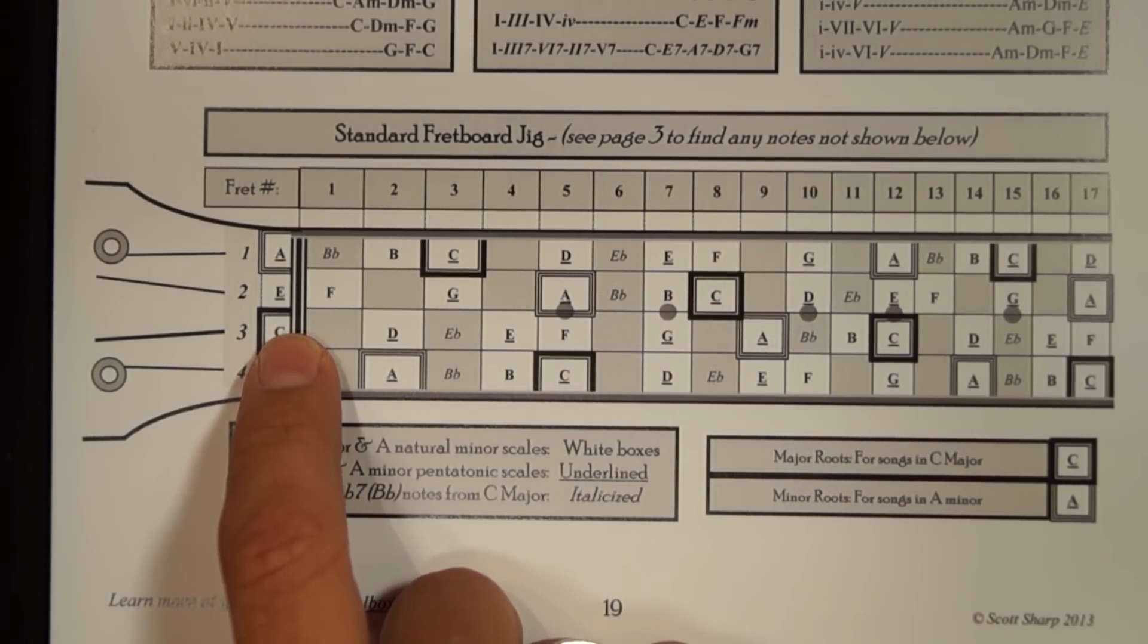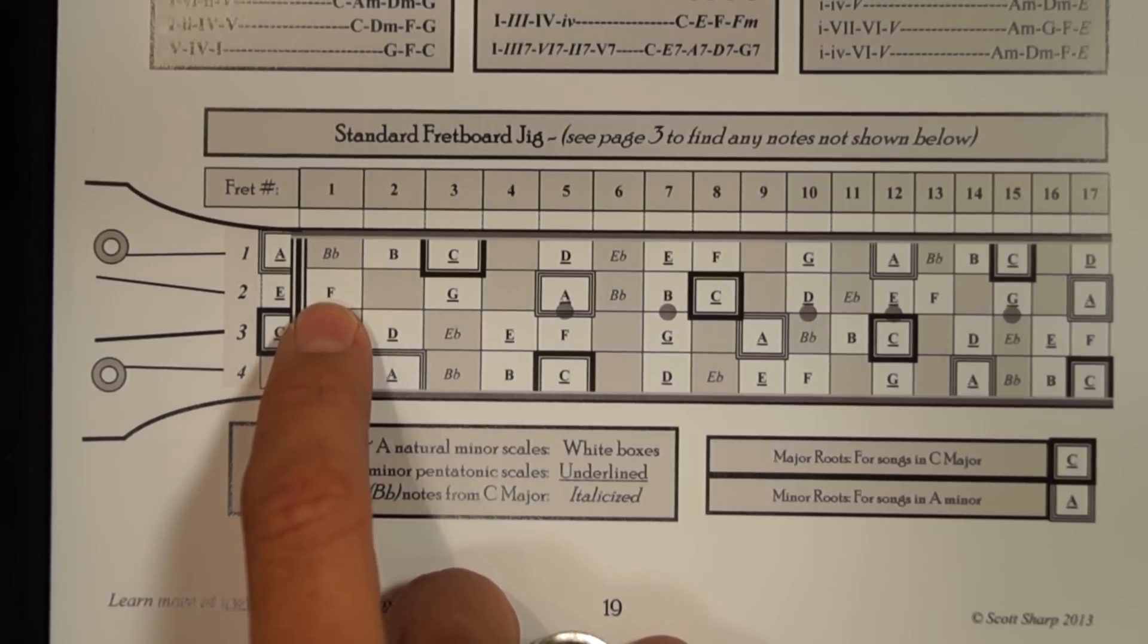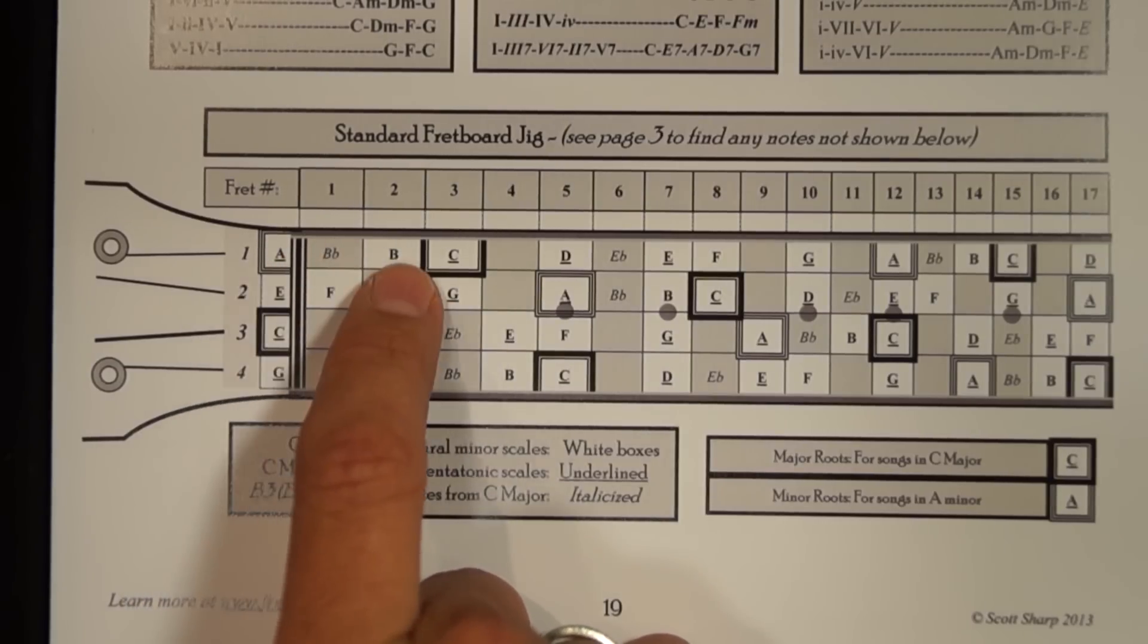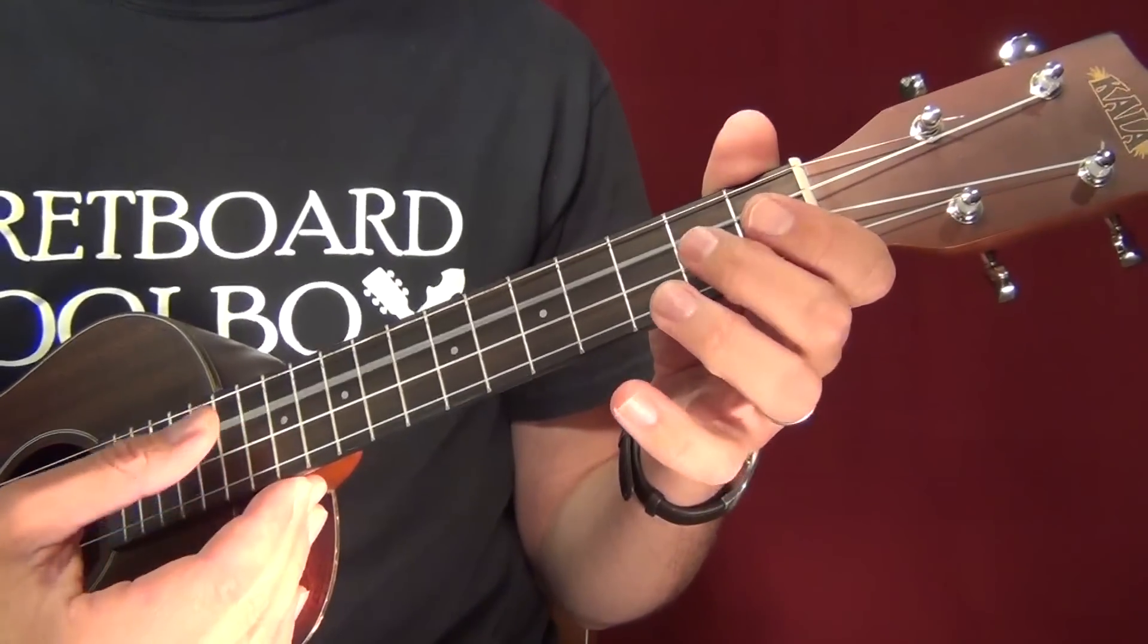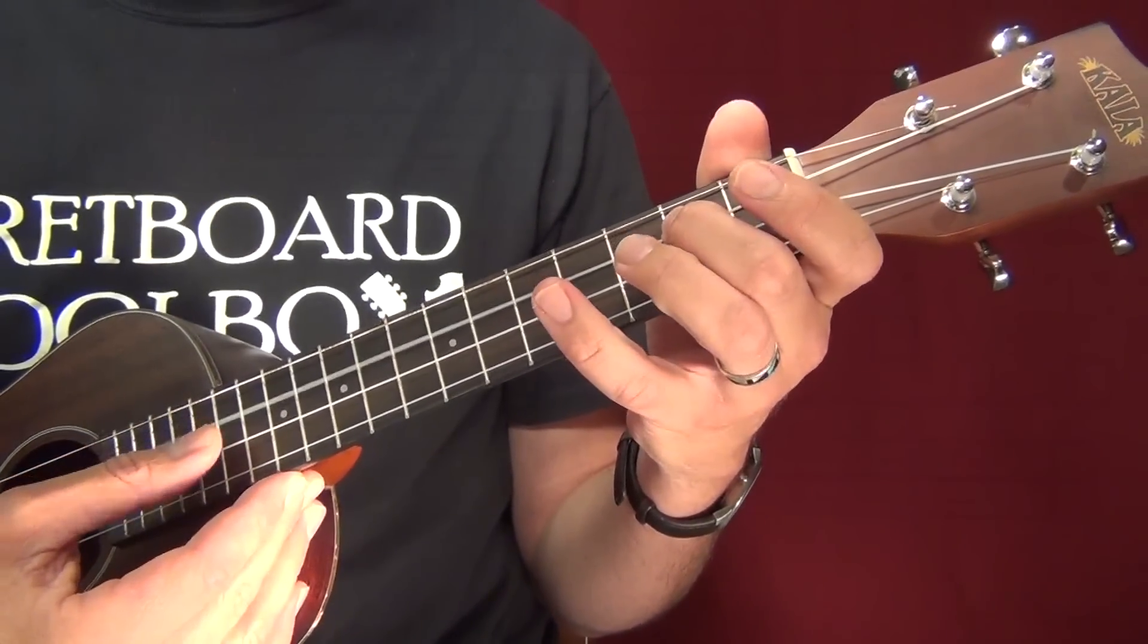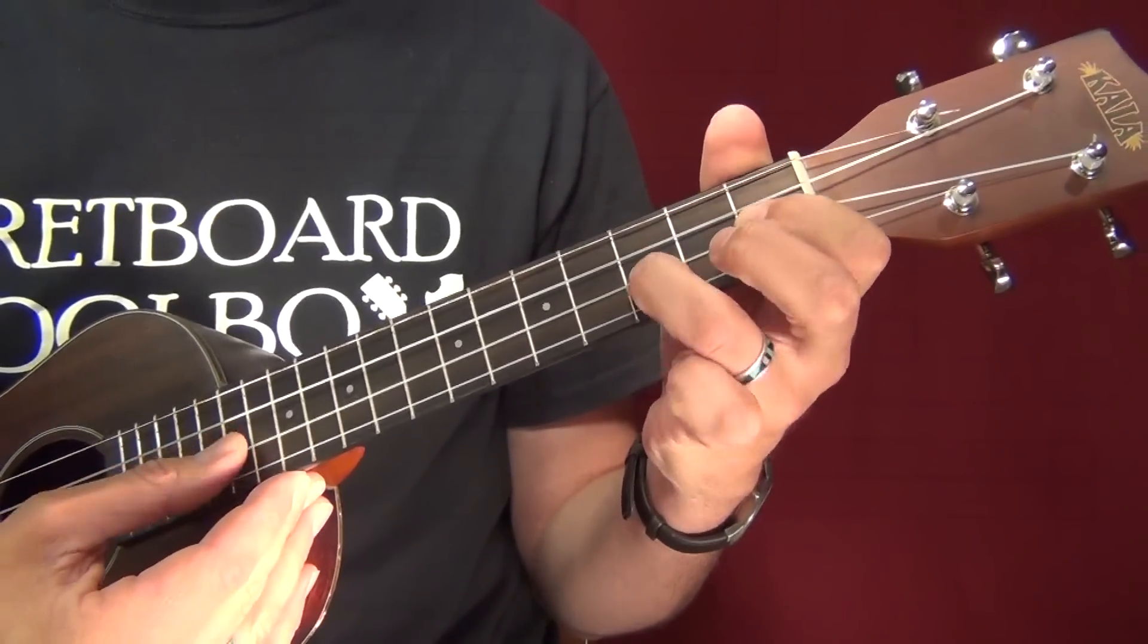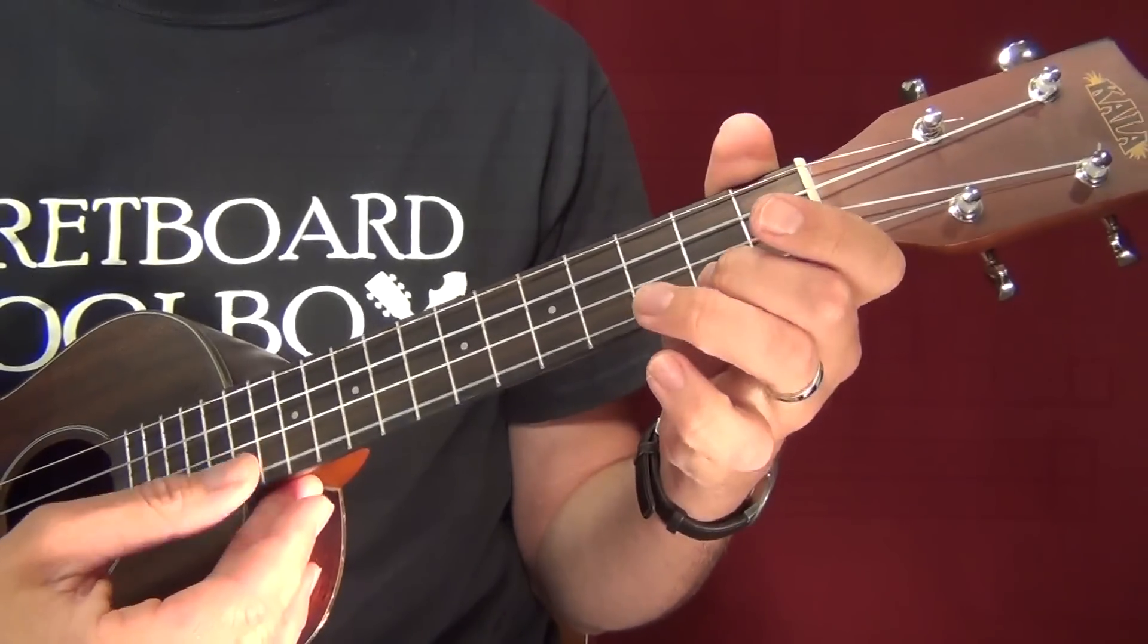I can do another C major scale here. C, open, and then D, E, F, G, A, B, C. And that's a nice position because there's a lot of open notes there. So that was third string, open, C, D, E, F, G, A, B, C.